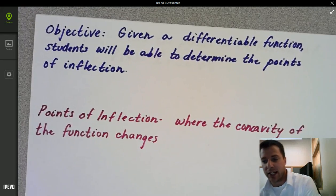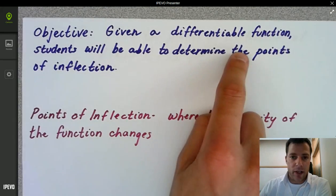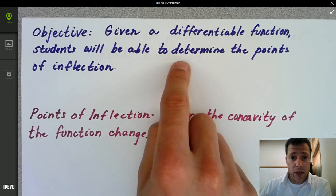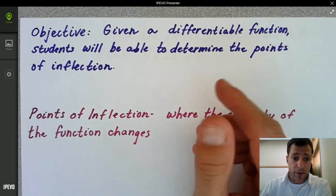Okay, so the objective today is given a differentiable function, you're going to be able to determine the points of inflection. You're going to need to know how to take a derivative of a polynomial function.